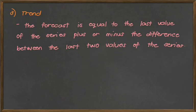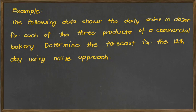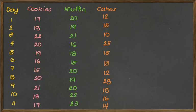Let's proceed with the example. For the following data, the data shows the daily sales in dozens for each of the three products of a commercial bakery. Determine the forecast for the 12th day using the naive approach. In our data set, we have three types of products: cookies, muffin, and cakes. With the naive approach, you don't need to do anything but just observe and look closely at the given data values.